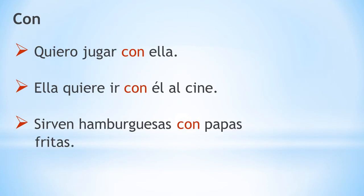CON. Con is usually used to indicate the presence of something or someone, whether it is a person, food or a thing. Por ejemplo, quiero jugar con ella. I want to play with her. Ella quiere ir con él al cine. She wants to go with him to the movies. Sirven hamburguesas con papas fritas. They serve burgers with french fries.